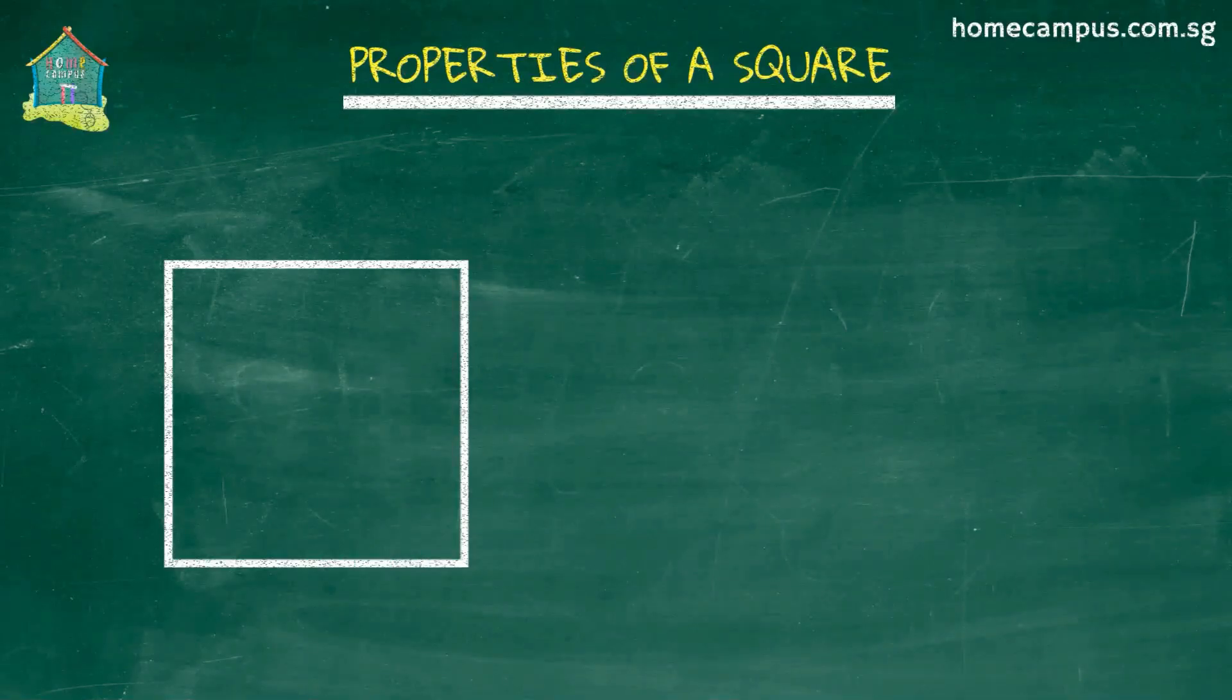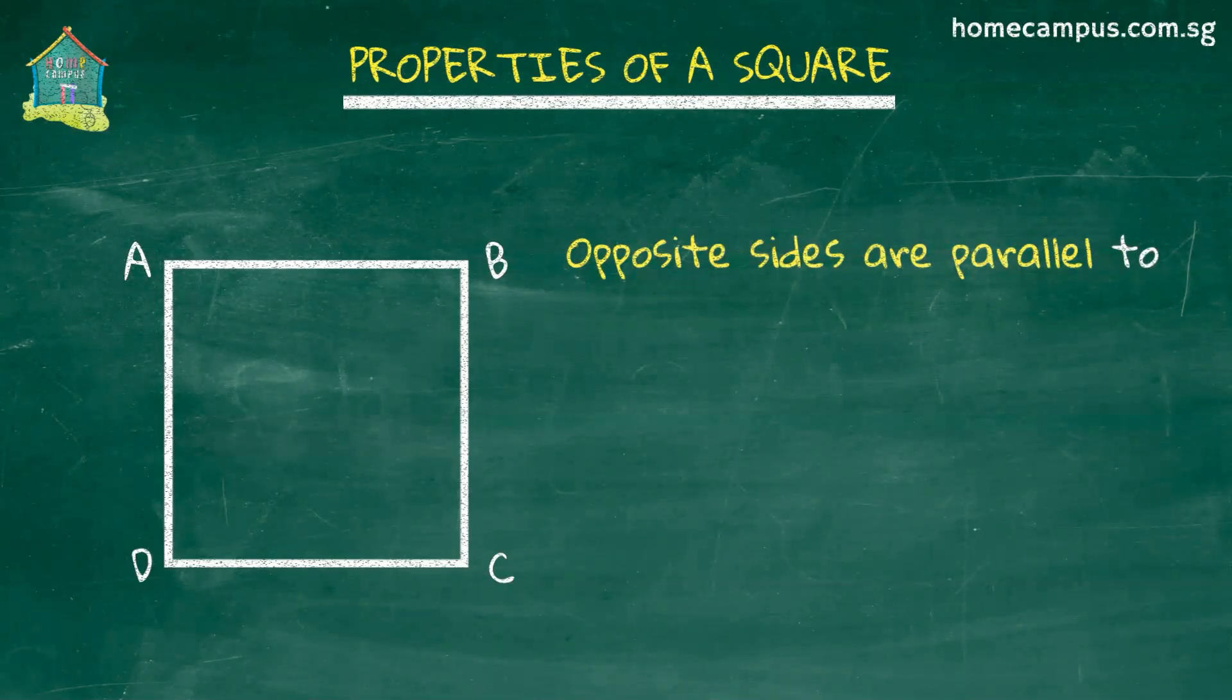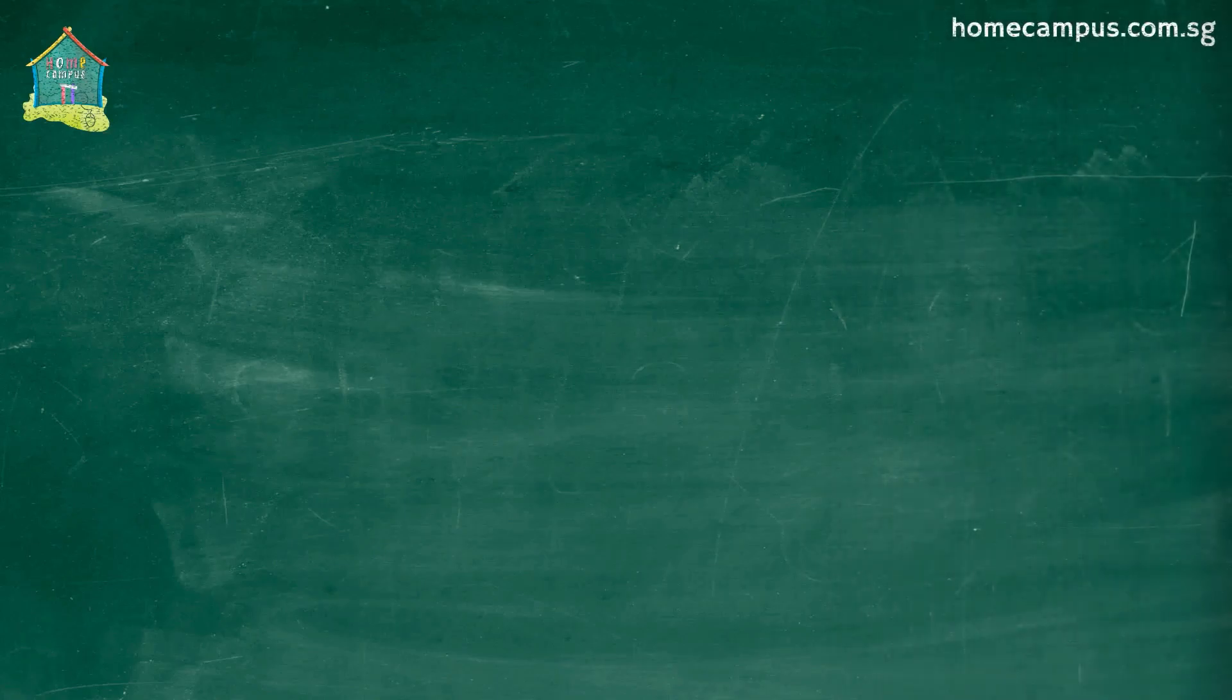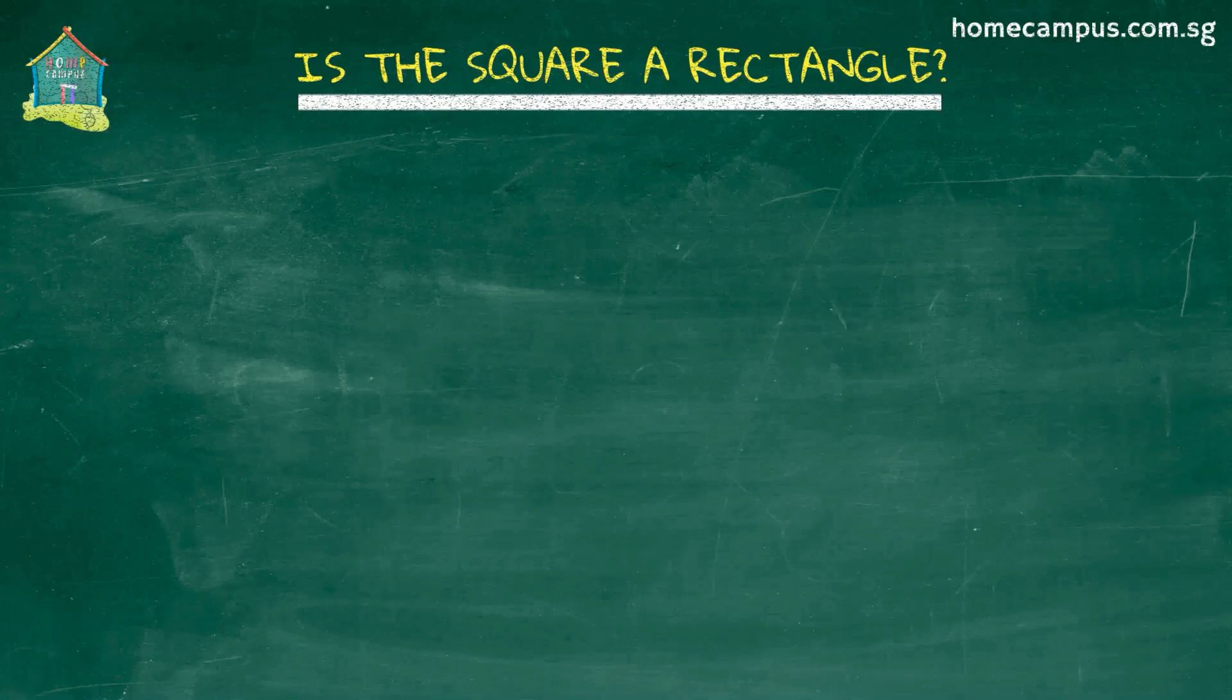The last important property of a square is that it has two pairs of parallel sides. Its opposite sides are parallel to each other, marked using arrowheads. In this square, AB is parallel to DC. We show this by placing the same number of arrowheads pointing in the same direction on the two lines. Similarly, AD is parallel to BC.